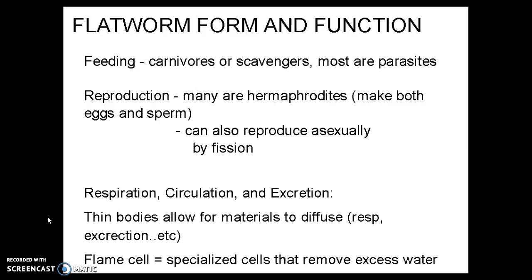Flatworms are mostly carnivores or scavengers, and most are parasitic. Not the planaria we're going to use in the lab, but some examples of flatworms are tapeworms, and those are parasites. As far as reproduction, many are hermaphroditic, which means one animal makes both eggs and sperm. They can also reproduce asexually by fission — if you split them in half, each half will regrow.